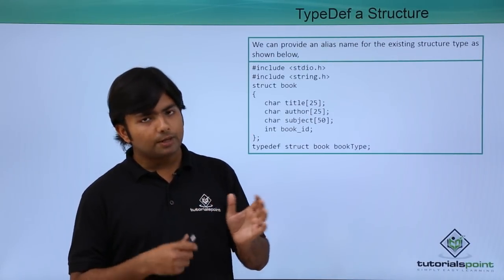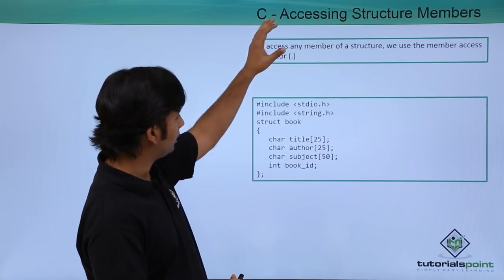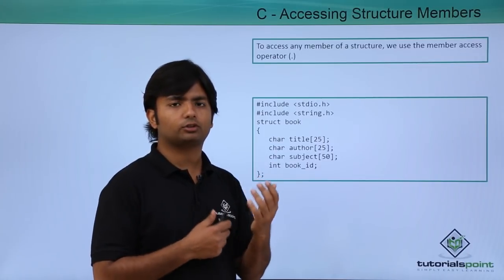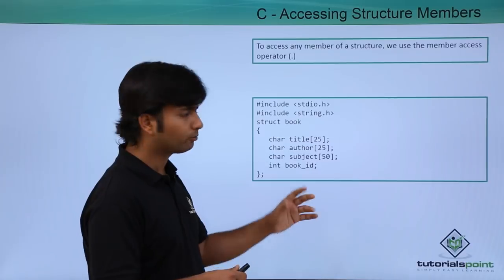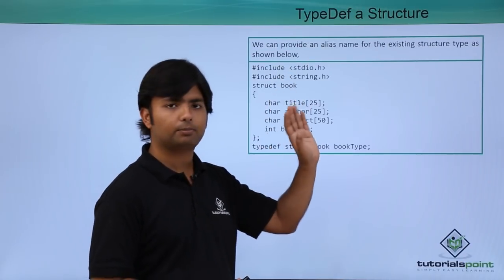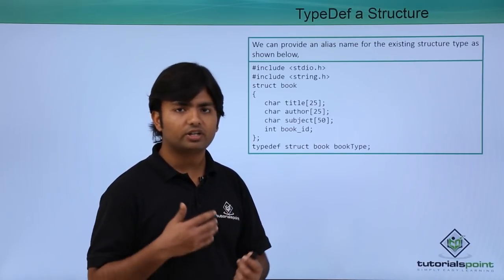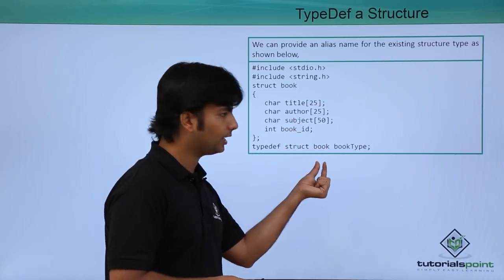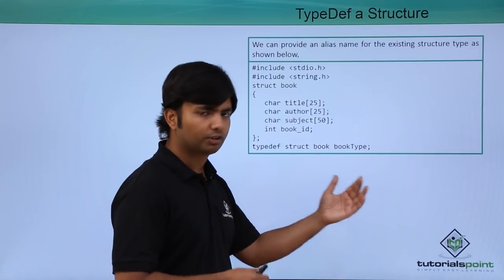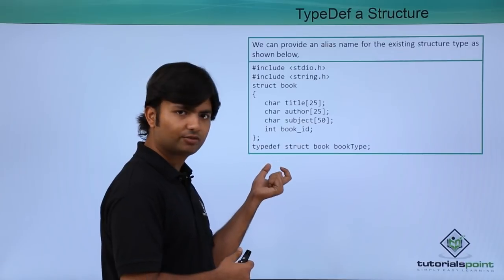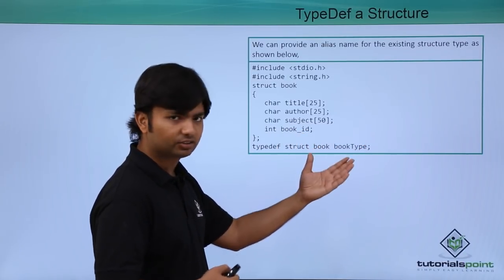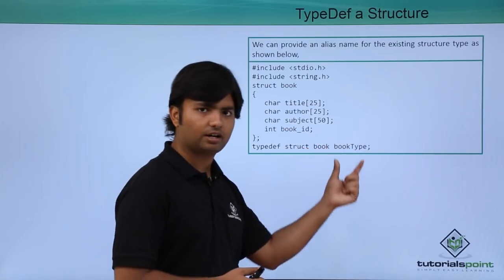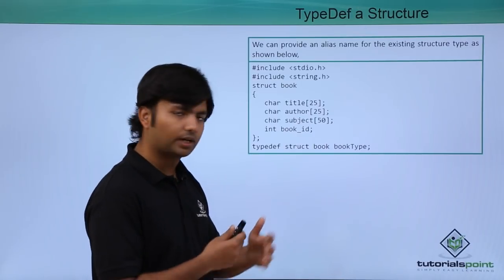Now if you want to use structures, whenever you want a variable of that type you would write struct book and then the variable name. If you want to give a shorter or more logical name so you don't have to write struct book every time, you can use typedef — which we have already covered for renaming a data type. So typedef, old data type which is struct book, then the new alias name. Here I said book_type — this is now a data type and you can simply use it to define variables.